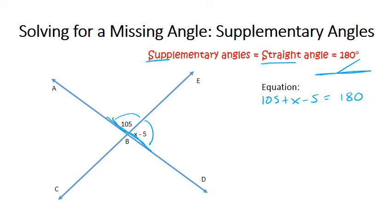So now I have to combine like terms. So I have 105 and minus 5. Those are both numbers that I can combine. So 105 minus 5 would give me 100 plus x equals 180.